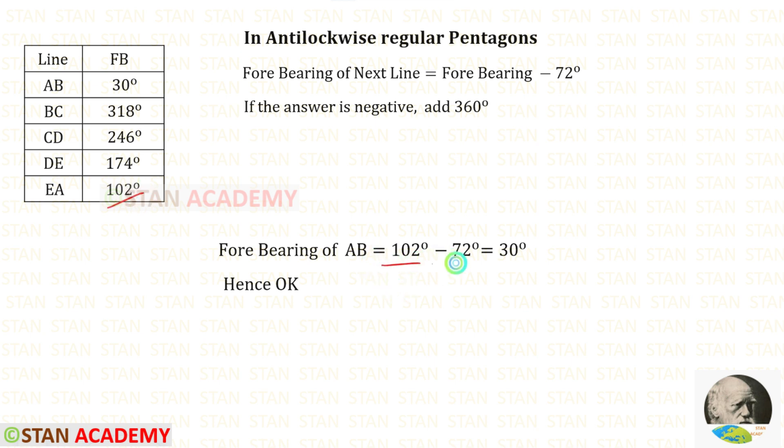102 degrees minus 72 degrees gives 30 degrees. We have got the same value. Hence, OK.